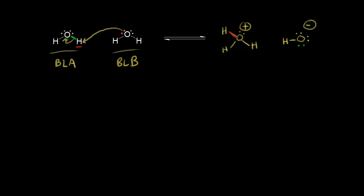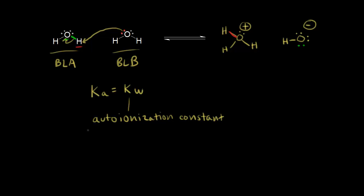So this is the autoionization of water. We can write an equilibrium expression for this reaction — we would write Ka, but for this reaction it's special, so we write Kw instead. Kw is called the autoionization constant, or you might hear it called the ion product constant, depending on your textbook.